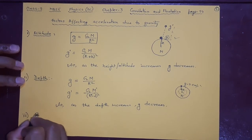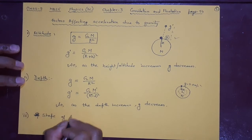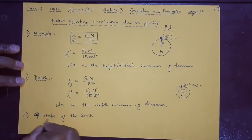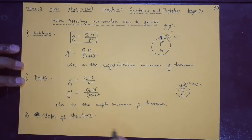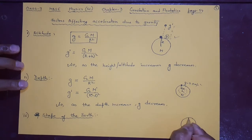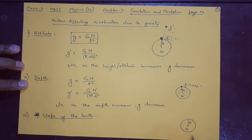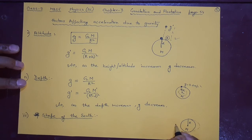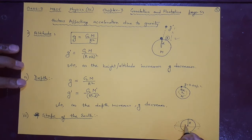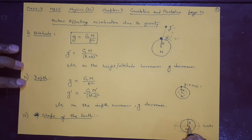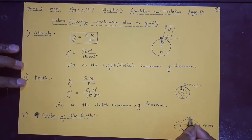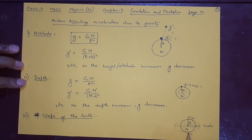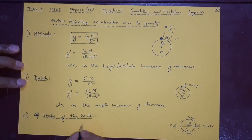The third factor is the shape of the earth. The shape of the earth also affects acceleration due to gravity. In reality, the earth is not a perfect sphere — it is slightly flattened. The equator side has a longer radius, while the poles have a shorter radius. So at the equator the radius is more, and at the poles the radius is less.